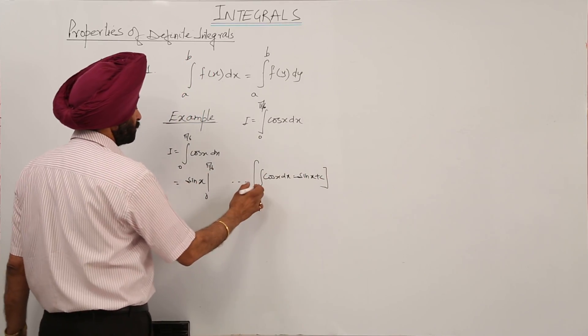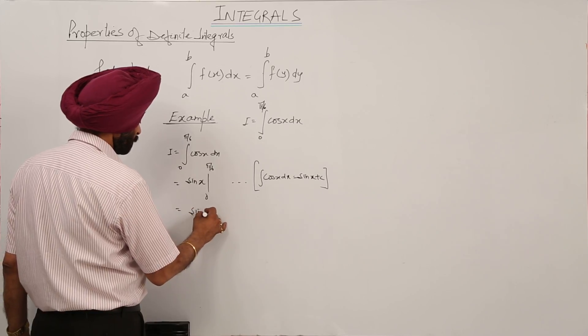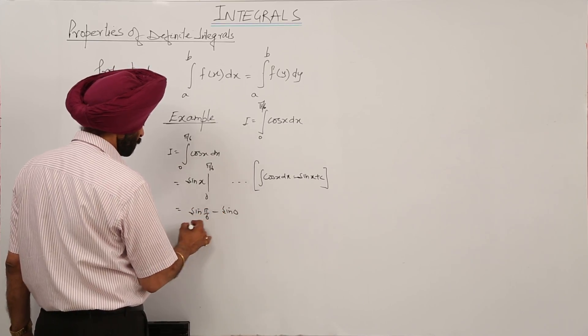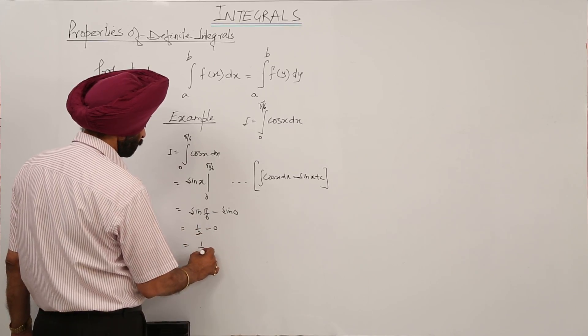So now what the answer is? Sin pi by 6 minus sin 0. This is equal to 1 by 2 minus 0 is equal to 1 upon 2.